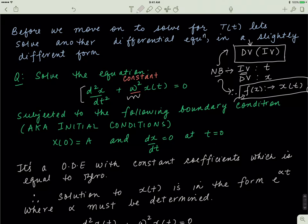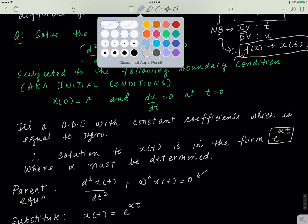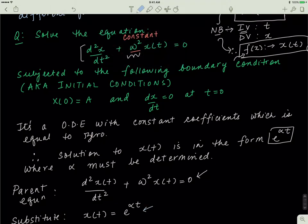This is an ordinary differential equation with constant coefficients and it's equal to 0. That means, like we've done before, the solution of x(t) has to be in the form e to the exponent alpha·t, where alpha must be determined. The parent equation is this, and we know that the solution is in the form e^(alpha·t), so we're going to substitute its solution into the parent equation.